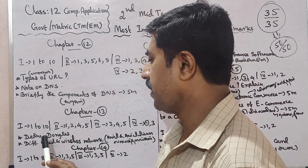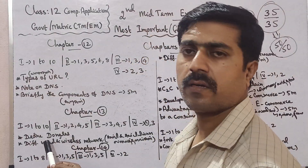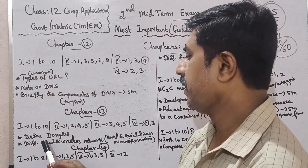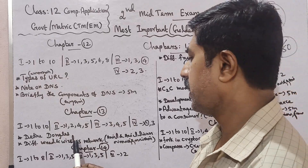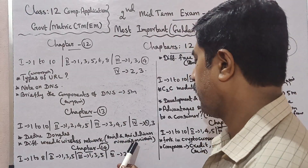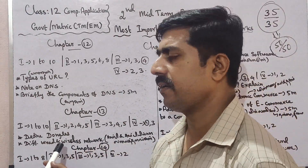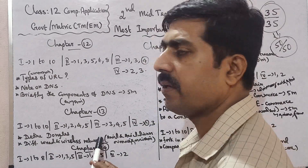Inside Chapter 12, the key questions are: define dongles, and differentiate wired and wireless network. These are important questions that are not commonly covered elsewhere.